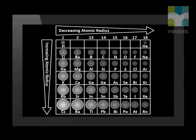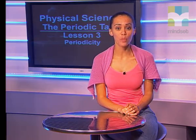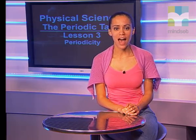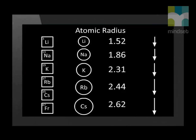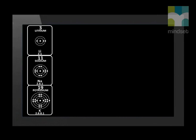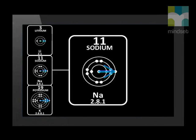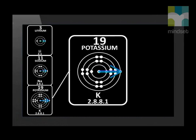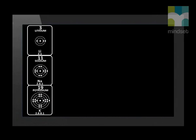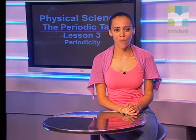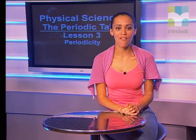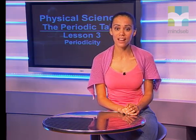Now let us look at how the atomic radius changes within a group. We saw that the atomic radius increases as we move down the group. As we move down the group, a new energy level is added. This means that the valence electrons — the electrons in the outer energy shell — are now further away from the protons in the nucleus. This also means that the valence electrons are shielded from the nucleus by the increased number of inner electrons. Therefore, the force of attraction between the nucleus and the valence electrons weakens and the atomic radius increases.